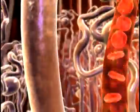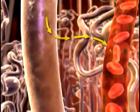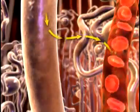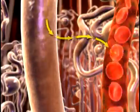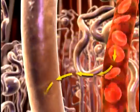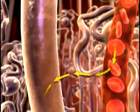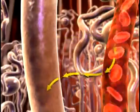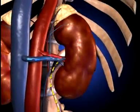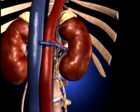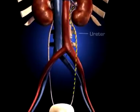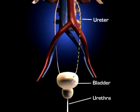Through tubular reabsorption, electrolytes and nutrients move from the filtrate back into the bloodstream. Through tubular secretion, substances move from the peritubular capillaries into the urine filtrate. The filtrate concentrates in the collecting tubules, then finds its way to the renal pelvis, where it is directed to the ureter, the bladder, and the urethra for elimination.